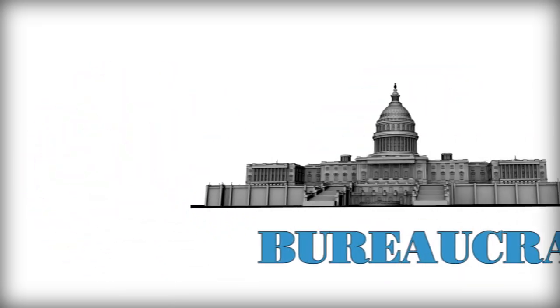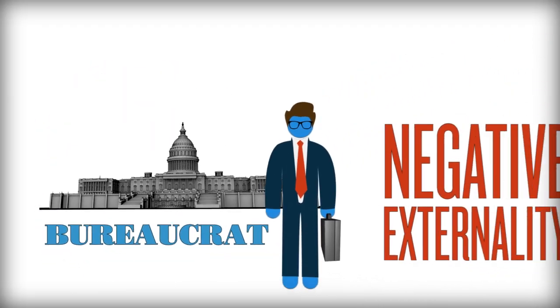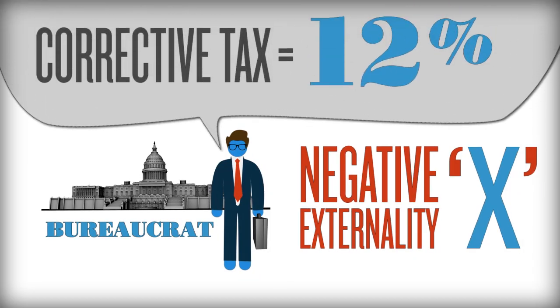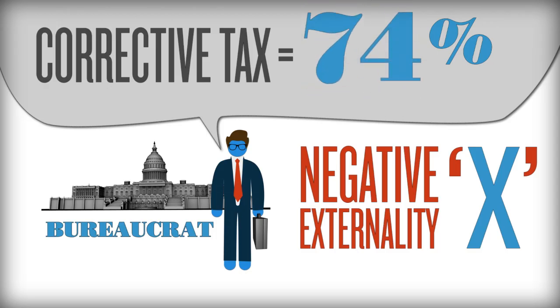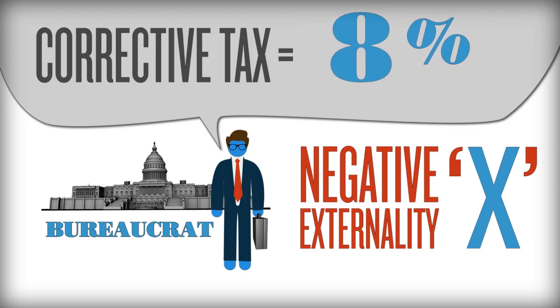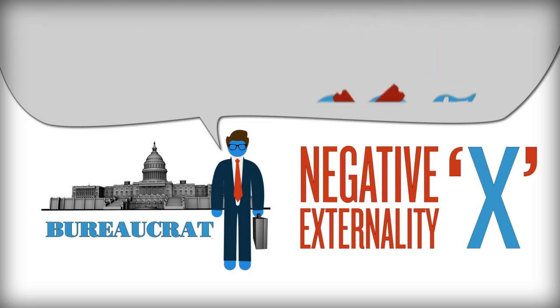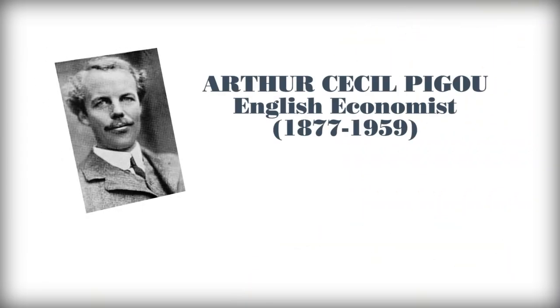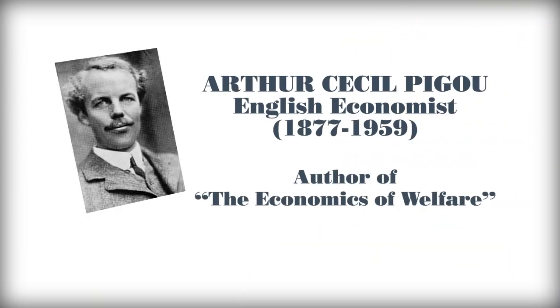Even if these solutions don't work, it may not be easy to fix it with taxes through state action. Remember, the problem is information. Prices don't contain the full information about cost. But where can accurate information be obtained? How can the state be expected to acquire more accurate information and then act on it effectively? The most interesting answer came from the original scholar to propose fixing it with taxes: A.C. Pigou.